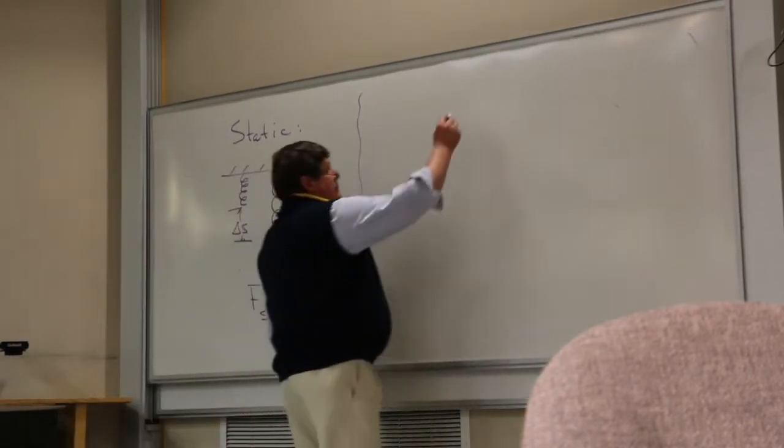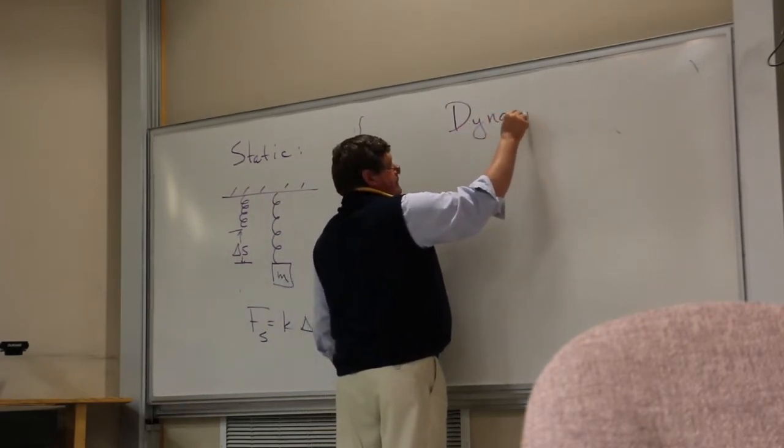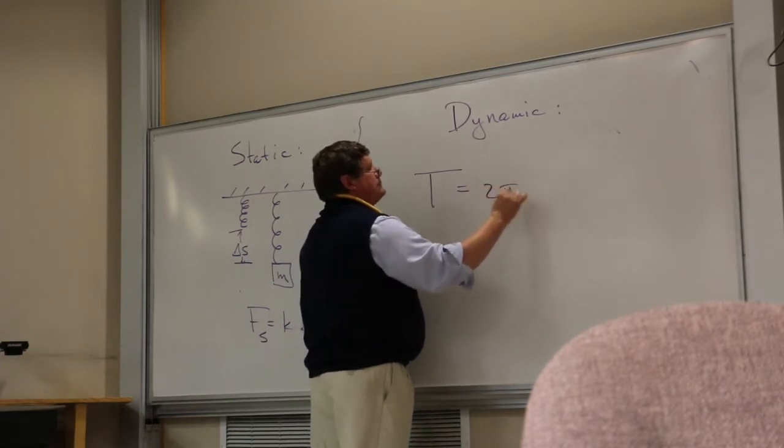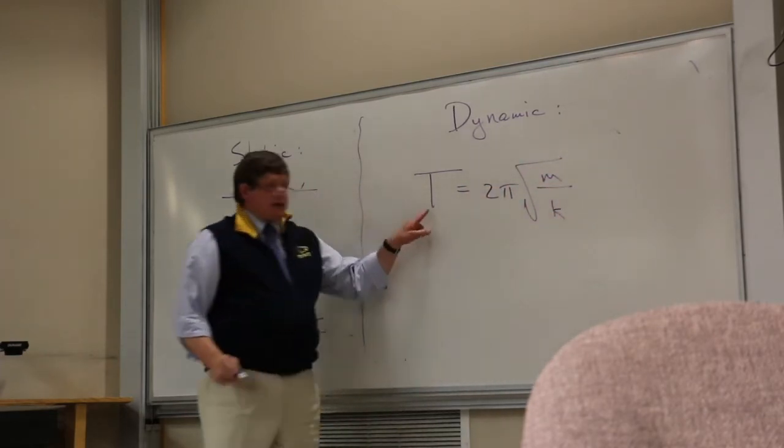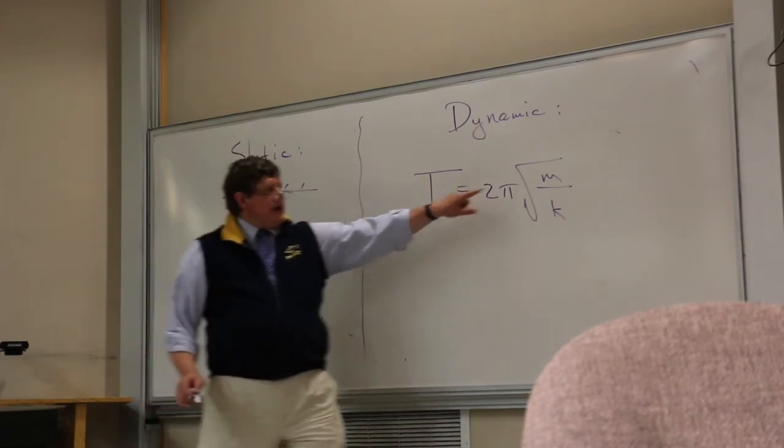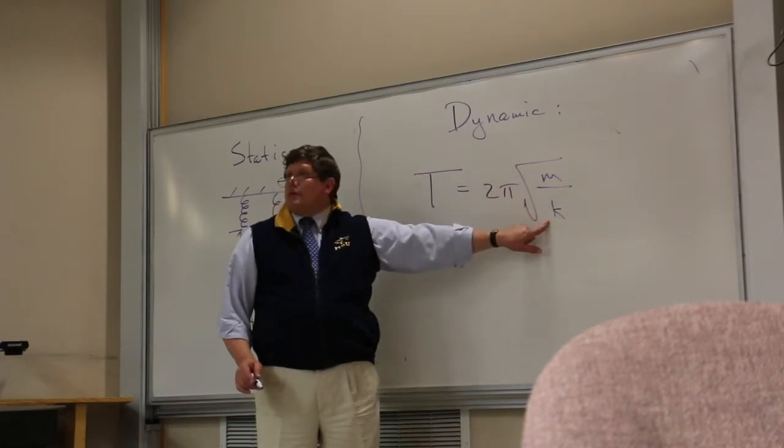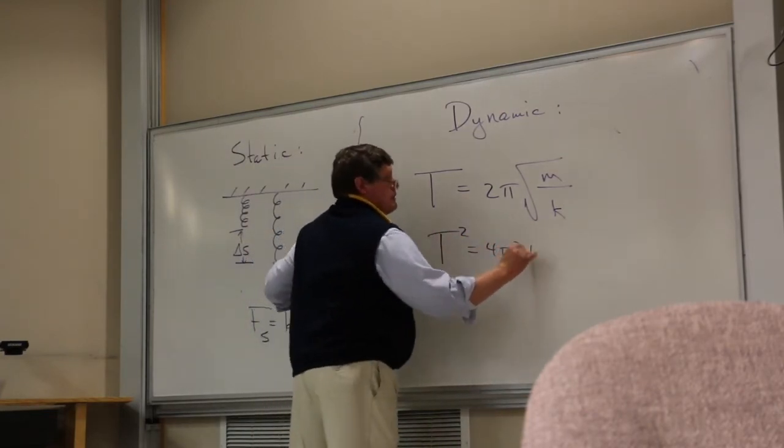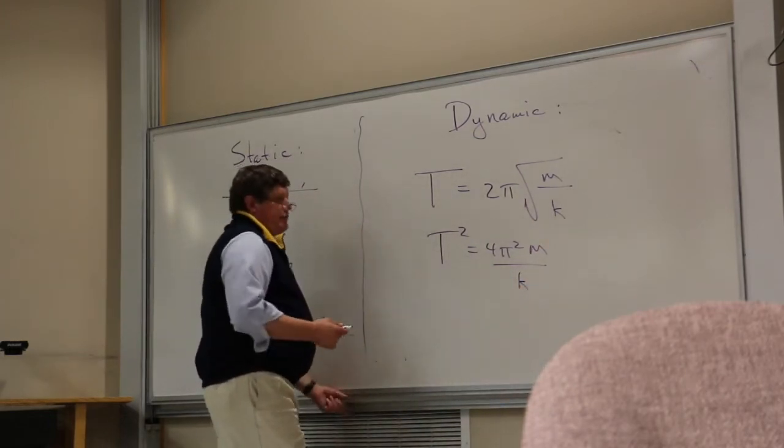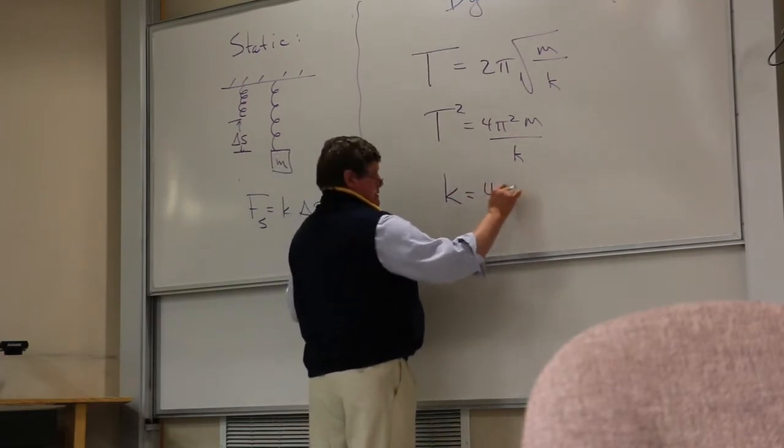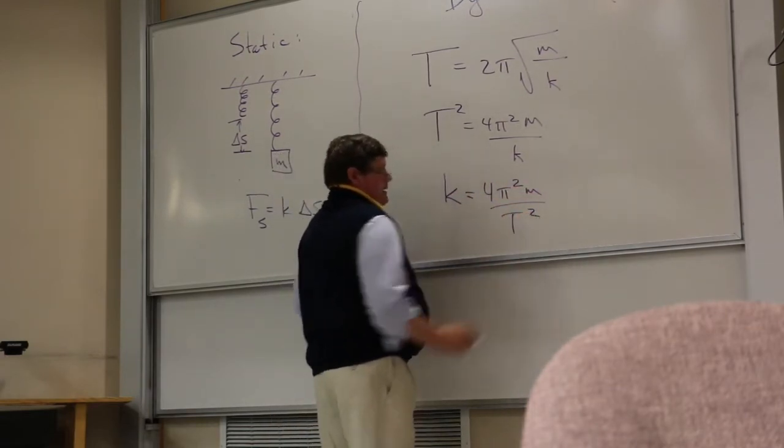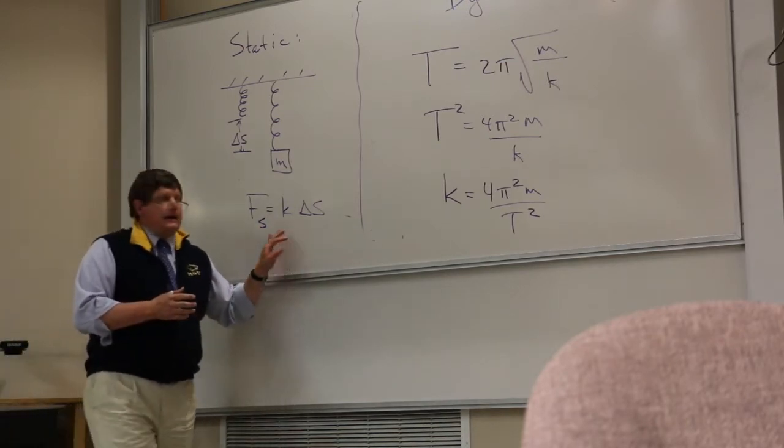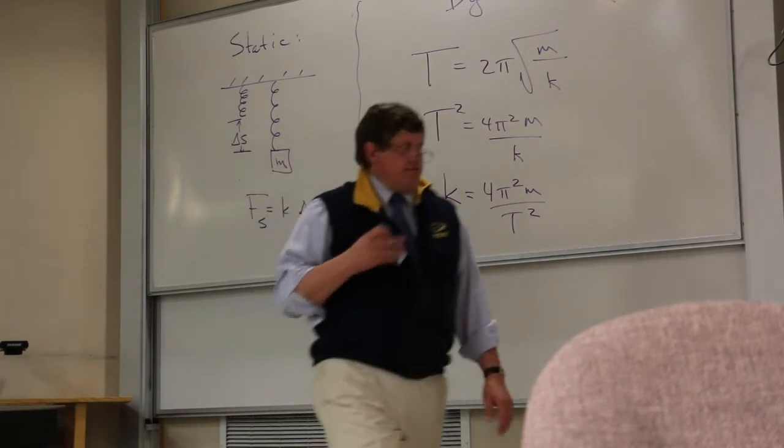The other method, called the dynamic method, has us bounce that mass up and down on the spring and use this formula. If we know the timing, the period of one oscillation, and we know the mass that's going up and down, we can solve this formula for K. We solve that formula by squaring both sides and get the K out of the basement by cross-multiplying.